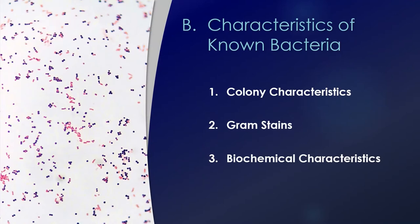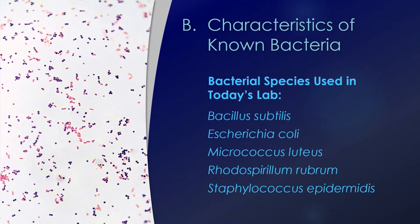In Part 2 of this lab we're going to characterize some known bacteria in three ways: we're going to look at the colony characteristics, we're going to look at them under a microscope using Gram stain, and thirdly we're going to look at various biochemical characteristics. We're going to use five different species — one of them is anaerobic, one forms endospores, and we have both Gram negatives and Gram positives. By the time we're done, you'll know a little bit about each of these different species.